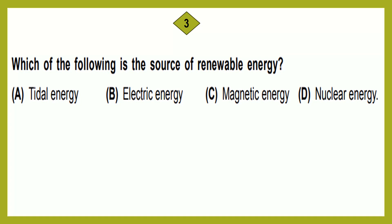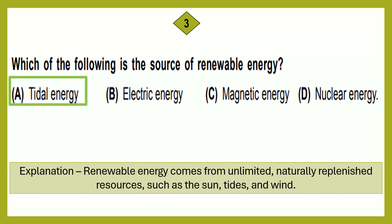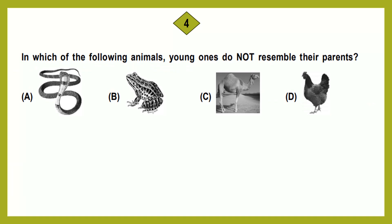Question number 3: Which of the following is the source of renewable energy? Option A: tidal energy. Option B: electric energy. Option C: magnetic energy. Option D: nuclear energy. The correct answer is option A, tidal energy. Renewable energy comes from unlimited, naturally replenished resources such as the sun, tides, and wind. Therefore, tidal energy is a source of renewable energy.